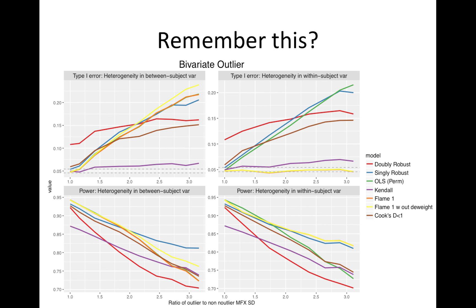These are the results I showed in the last video — I'll walk you through it. The top row is the type one error rates, the bottom row is power. I should have just taken the bottom row off because power is kind of a non-story here, since the type one error rates are never controlled. These are simulated null data with bivariate outliers. The outliers are either driven by between-subject variance on the left or within-subject variance on the right.